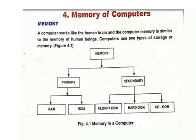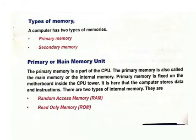Computer, Lesson 4 — Memory of Computer. In memory of computer, we have types of memory. There are two types of memory: primary memory and secondary memory. Let us see about primary or main memory. We have Random Access Memory — RAM, and Read-Only Memory — ROM.